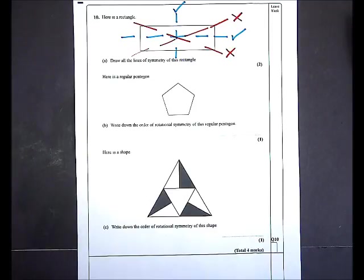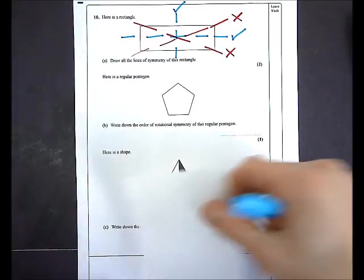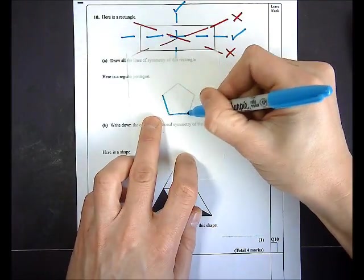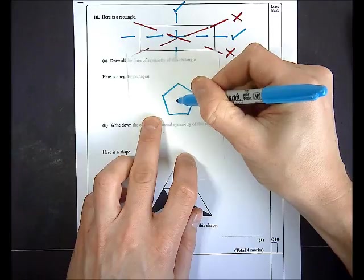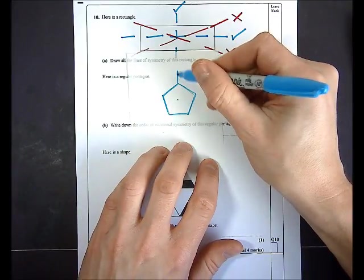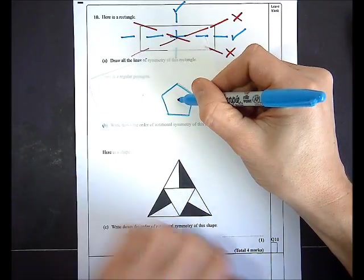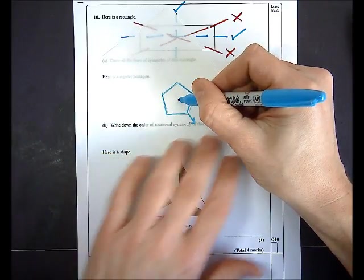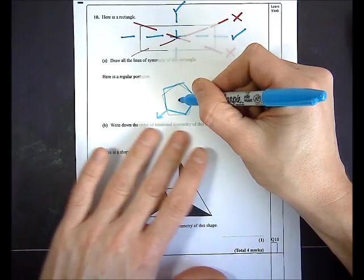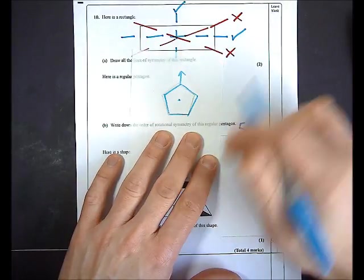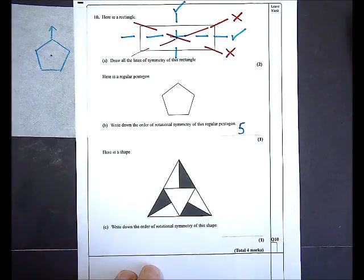In the second part I'm asked to write down the order of rotational symmetry of a regular pentagon. I take a piece of tracing paper, trace the pentagon, put my pen in the middle and spin it round to see how many times it looks the same. It looks the same once, twice, three times, four times, and five times in 360 degrees. So the rotational symmetry is order five.